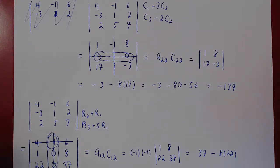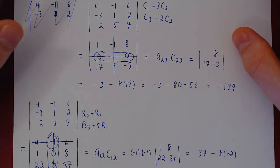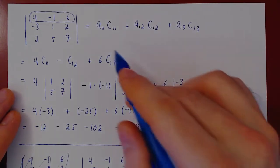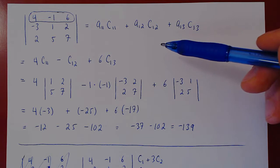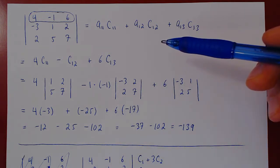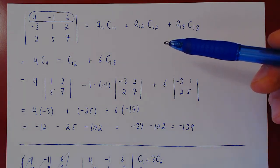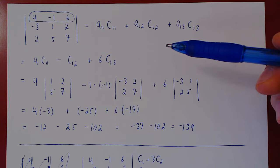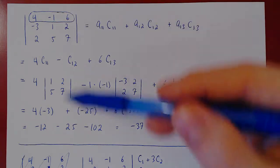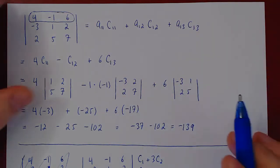Let's do one last example with a 4 by 4 determinant. In the case of a 4 by 4, we will not use cofactor expansion directly, because you would have four cofactors each being a 3 by 3 determinant — essentially doing the 3 by 3 work four times. That's way too much work. So we'll jump directly to introducing zeros with row and column operations.